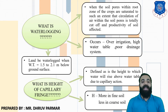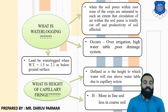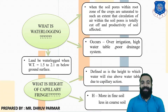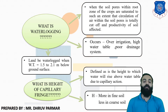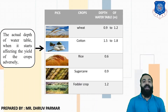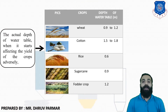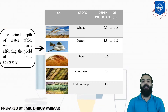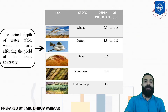In waterlogging, the land becomes waterlogged when the water table is equal to 1.5 to 2.1 meters below the ground surface. There are various crops and their safe depth of water table: wheat requires 0.9 to 1.2 meters, cotton 1.5 to 1.8 meters, rice 0.6 meters, sugarcane 0.9 meters, and fodder crop 1.2 meters.